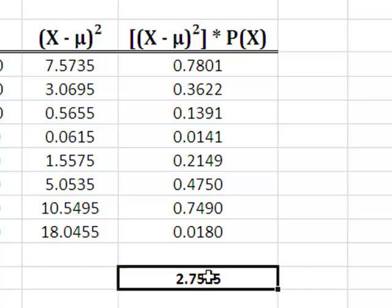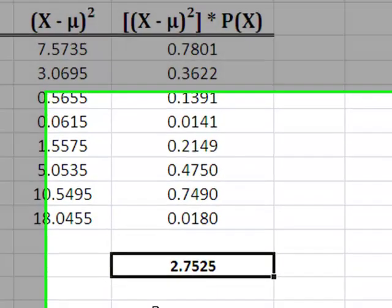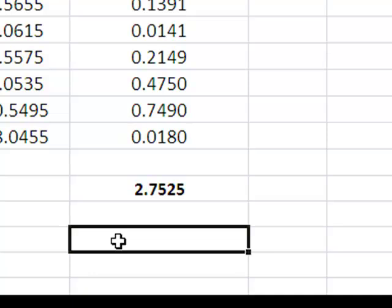Remember, that's the variance, right? That's the variance. Variance, we have to go through the variance to get to the standard deviation. Well, what's the relationship between variance and standard deviation? Standard deviation is simply the square root of the variance.